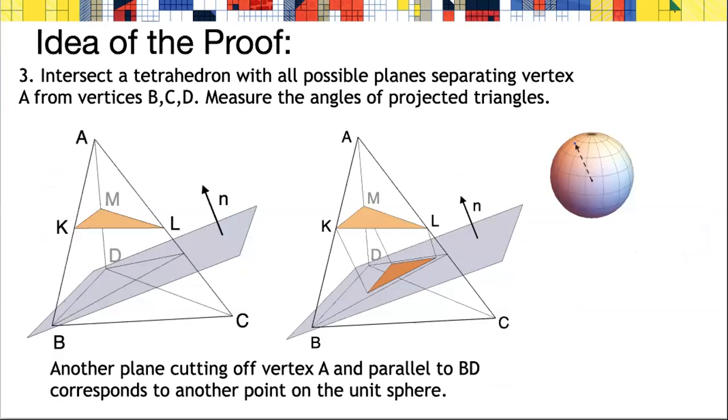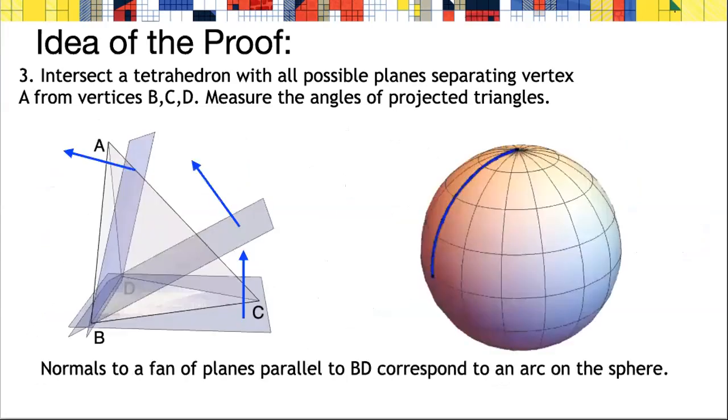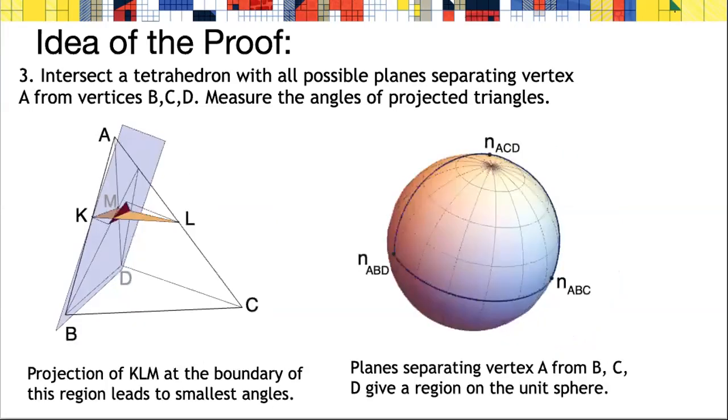What we need to do is consider all the possible planes intersecting the tetrahedra, which have the property that they separate the vertices in the same way that the midnormal triangle KLM does. The set of all planes separating A from vertices BCD in this tetrahedron have normals which lie inside a spherical triangle. An angle function on the spherical triangle will give us the projected angles of one of the angles in the midnormal triangle.